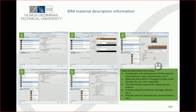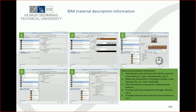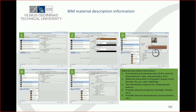The next part is appearance. Here you can select rendering textures and create special rendering materials which will be visible in the rendered version of your project.